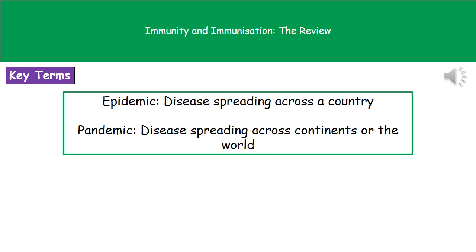Two key terms to be aware of when thinking about diseases and their spread. The first is an epidemic, which refers to a disease that's able to spread across a country. If we're talking about something more serious — a disease that spreads across entire continents or maybe even the whole world — what we're referring to is a pandemic.